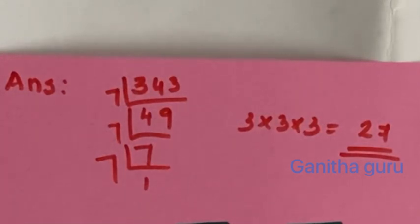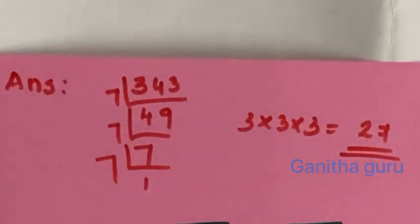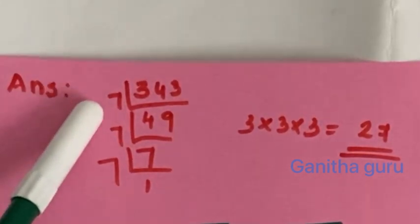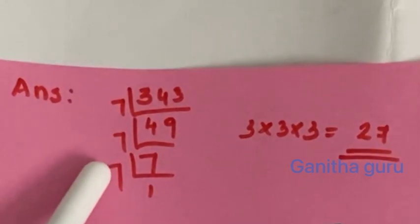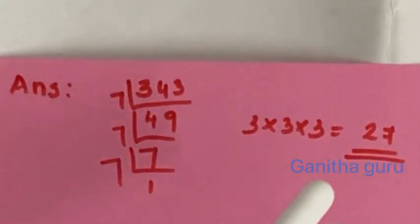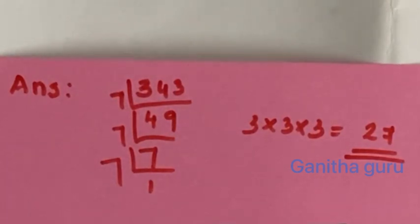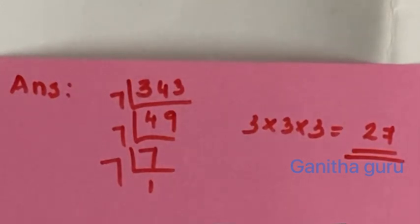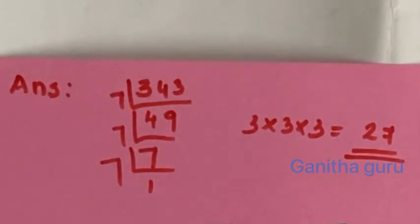So what is our answer? 27. We have 343 and k to make a perfect cube. We multiply to get three sets of numbers with three factors each. So the answer is 27.